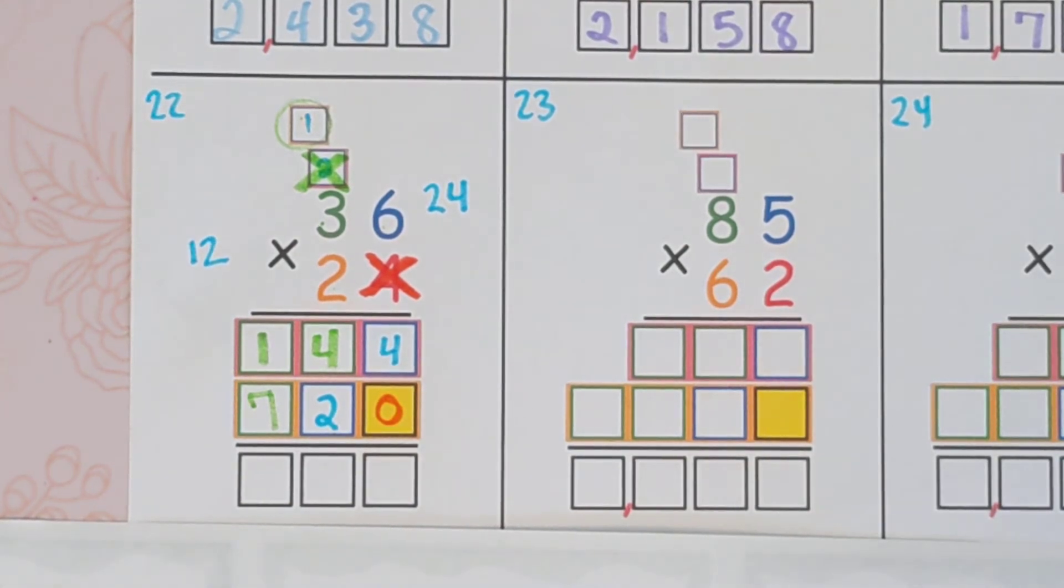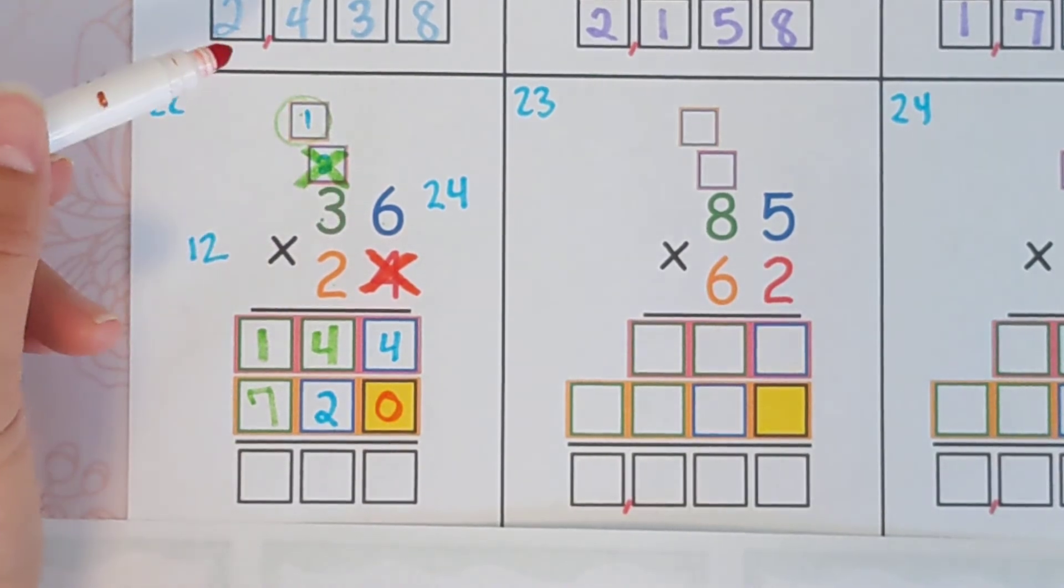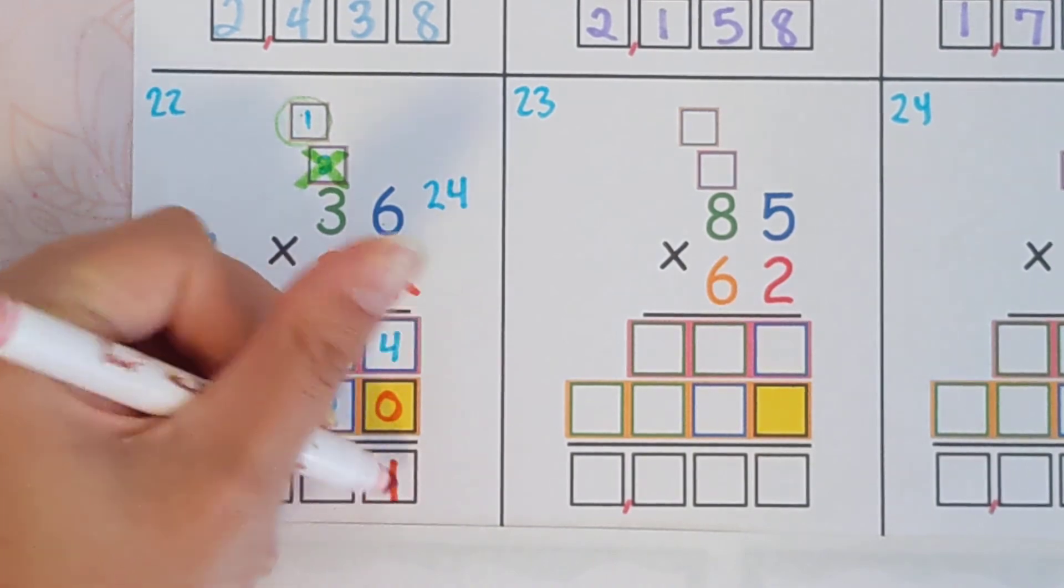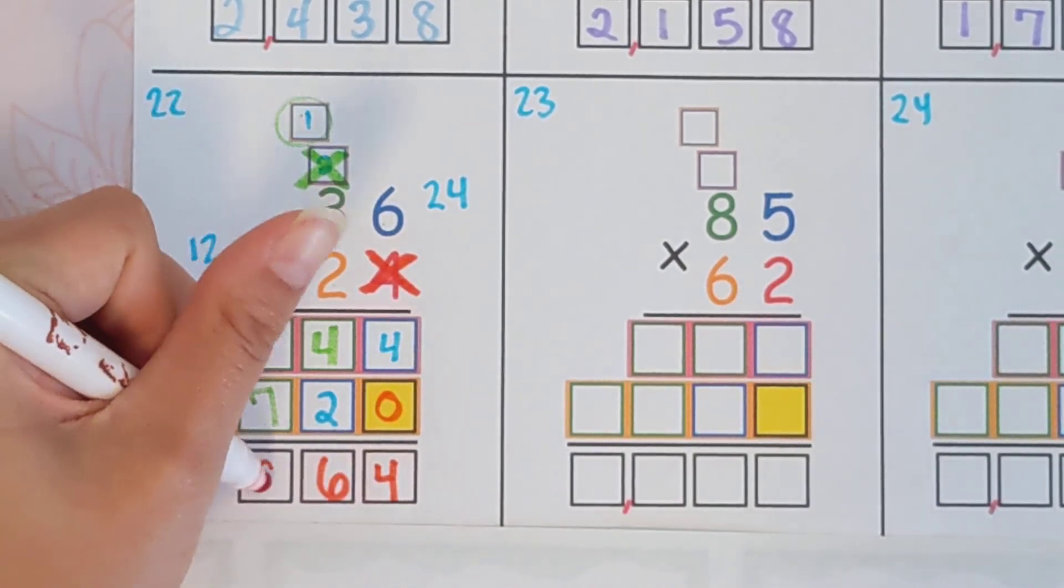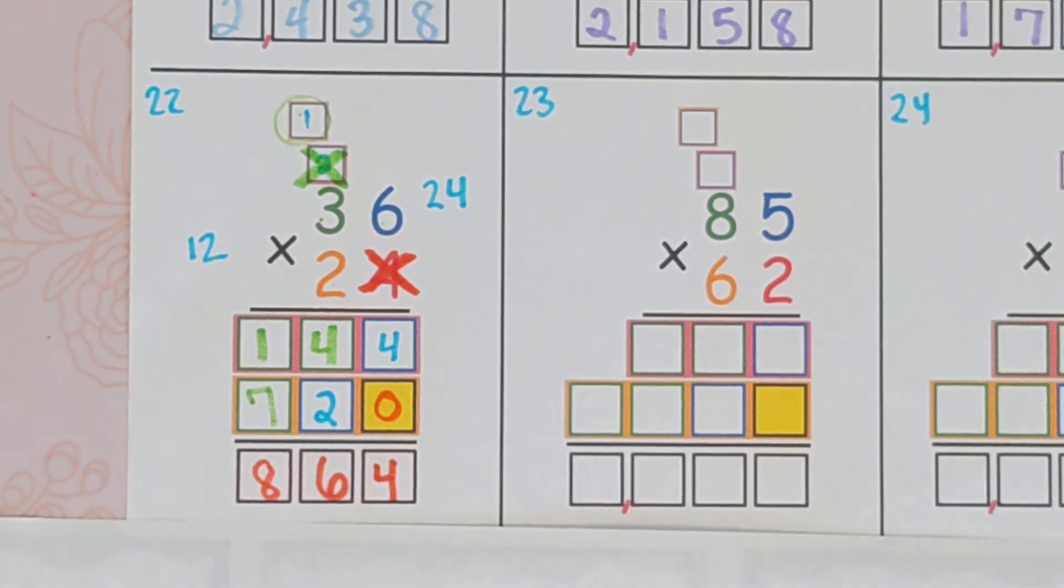And that's why you add at the end because what you're doing is you're taking this complicated number arrangement and you're just doing half at a time. You're doing, okay, let's do the four and then let's do the two and then just add it all together. So four plus zero is four. Four plus two is six. One plus seven is eight. So 36 times 24 is 864.